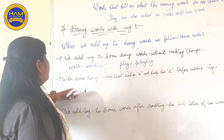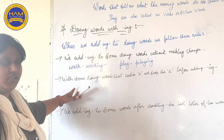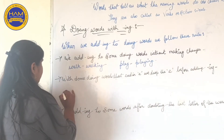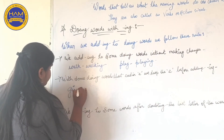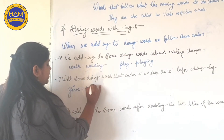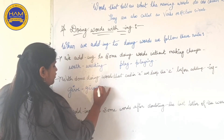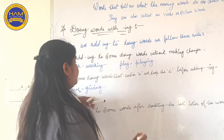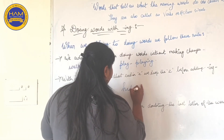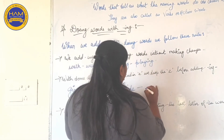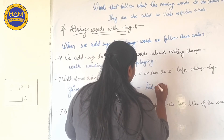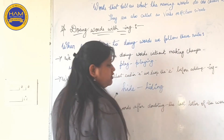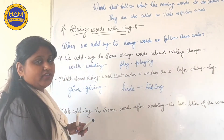Rule two: with some doing words which end in 'e', we drop the 'e' before adding -ing. For example, 'give' becomes 'giving' — we drop the 'e' and add -ing. Similarly, 'hide' becomes 'hiding' (h-i-d-i-n-g) — we drop the 'e' and add -ing.